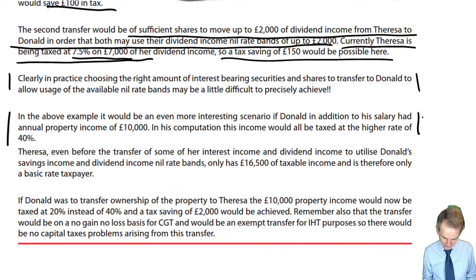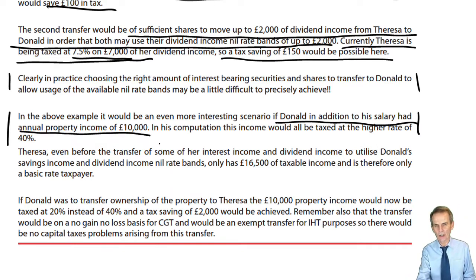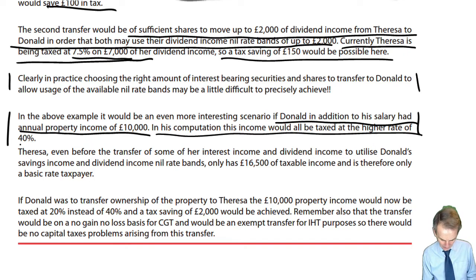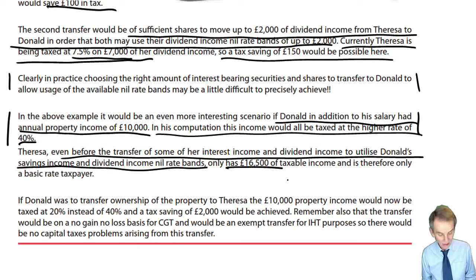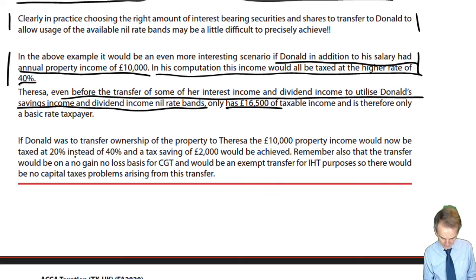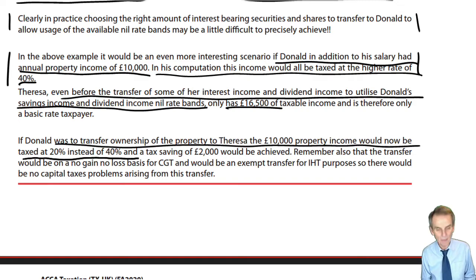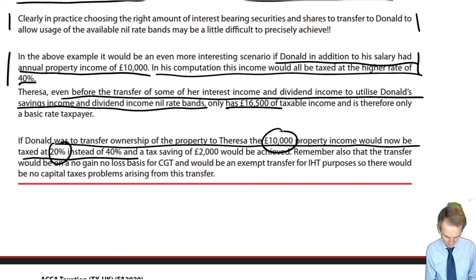Clearly, if Donald in addition to his salary had annual property income of £10,000, we're back to the situation from our husband and wife example previously. In his computation, this income would all be taxed at the higher rate of 40%. Teresa, even before the transfer of some of her interest and dividend income to utilise Donald's nil rate bands, is only a basic rate taxpayer with only £16,500 of taxable income. Therefore, an obvious one: if Donald were to transfer ownership of the property to Teresa, the £10,000 property income would be taxed at 20% in her hands rather than 40% in his hands.